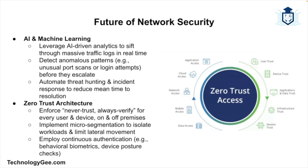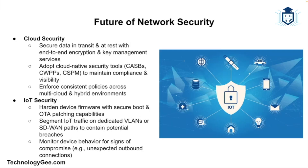Then there is the zero trust architecture — the zero trust model assumes that threats can exist both inside and outside the network perimeter. It requires strict verification of every user and device attempting to access network resources, regardless of their location. Then there's cloud security — as organizations continue to migrate to cloud environments, cloud security is becoming a critical component of network security, involving protecting data, applications, and services in the cloud from various threats.